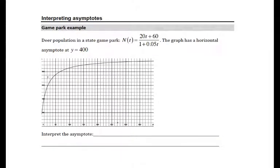Interpreting asymptotes. Sometimes we have to find the asymptote first, sometimes it's given to us. In this case, the asymptote is given to us as y equals 400, but let's just see really quickly how we could find that on our own.